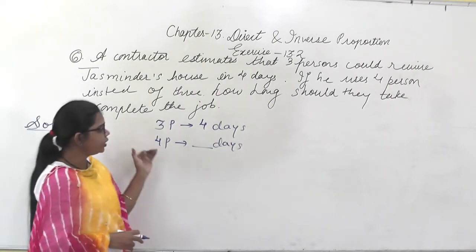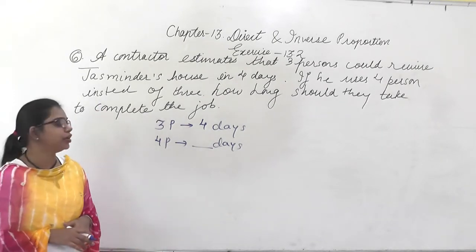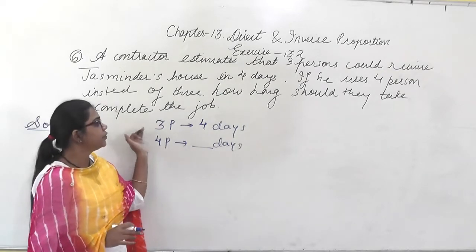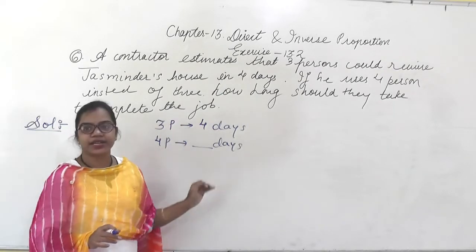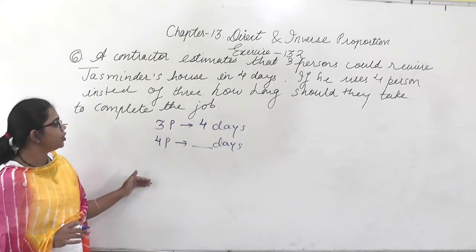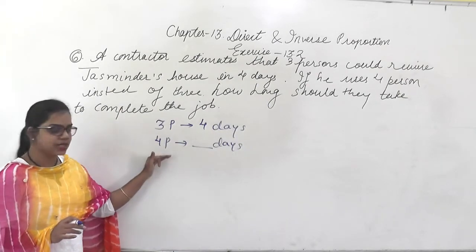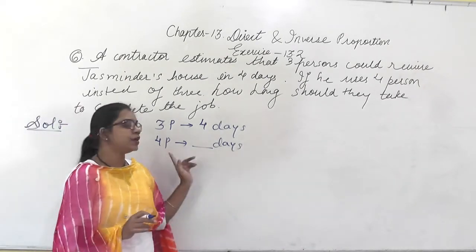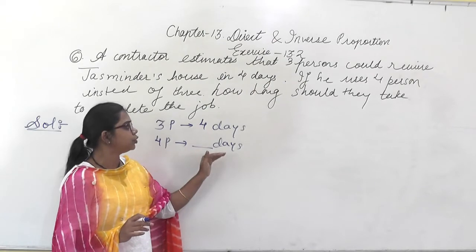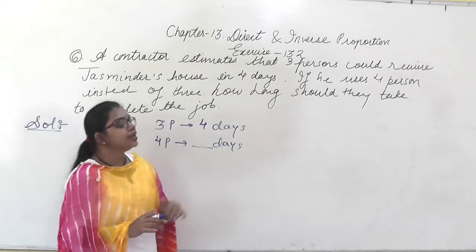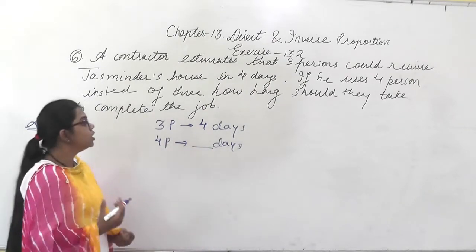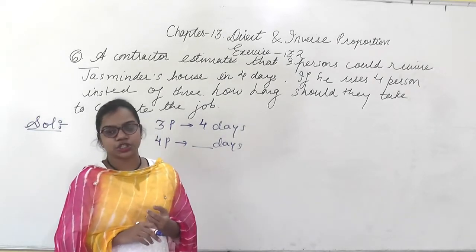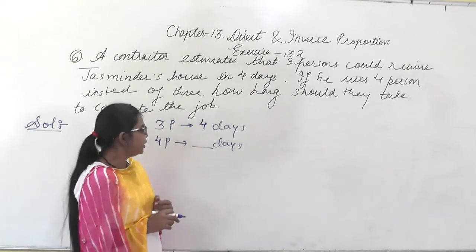In this question, it is saying that for the revival of the widow's house, the contractor estimated 3 persons will complete this job in 4 days. Instead of 3 persons, if he uses 4 persons, how many days will it take to complete the job? You have to find out the number of days. Now we have to find out whether this is in inverse proportion or in direct proportion.